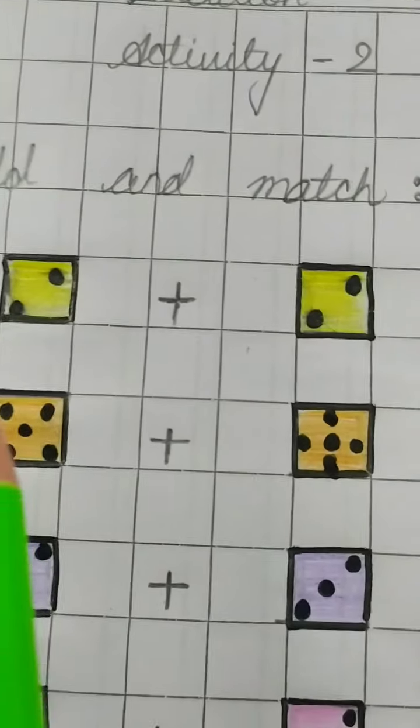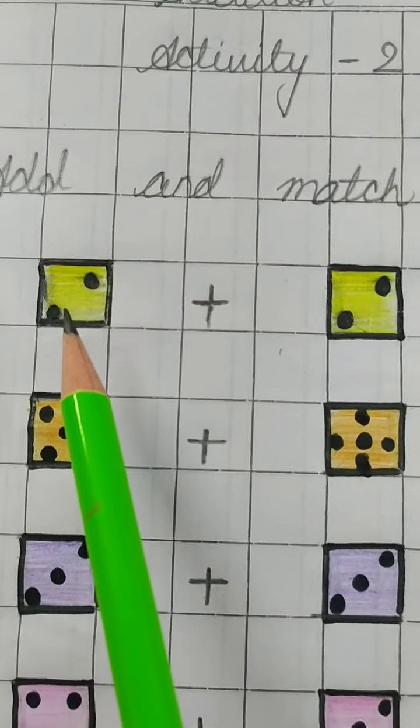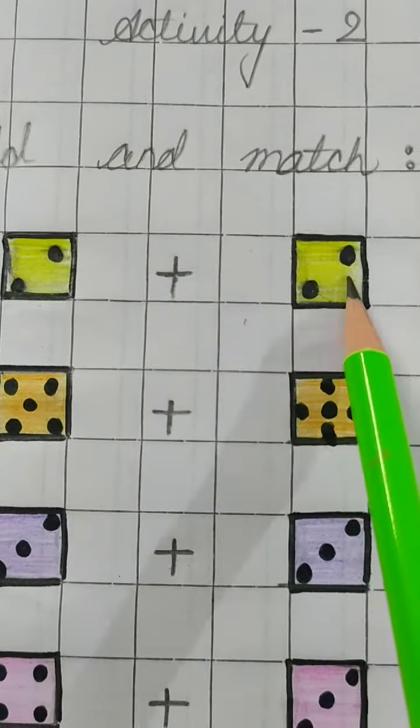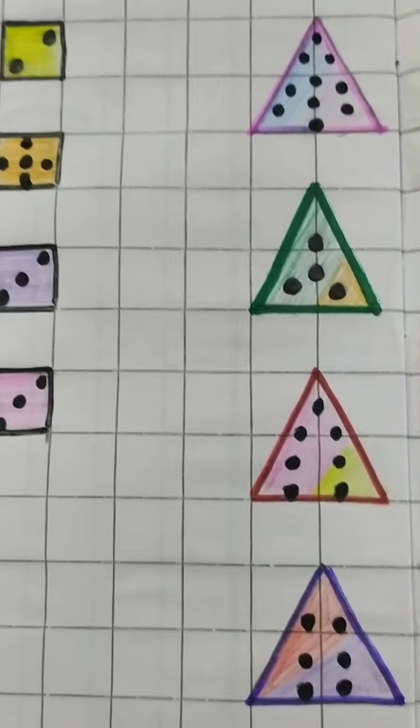In the first question you can see, there are, see how many dots in the first box. 1, 2. Next, again 1, 2. So let's add them. 1, 2, 3, 4. Aap hume dekhna hain, kaun se triangle mein 4 dots hain.